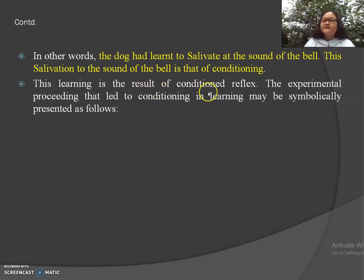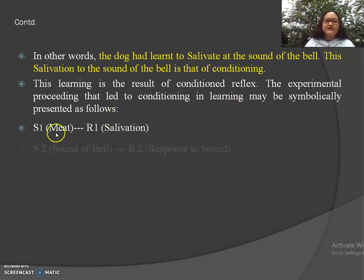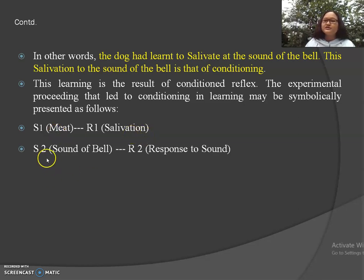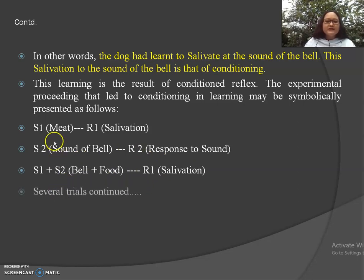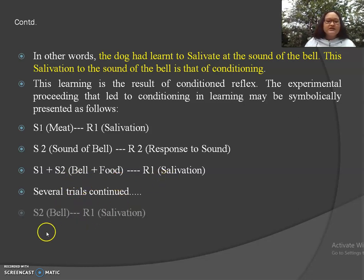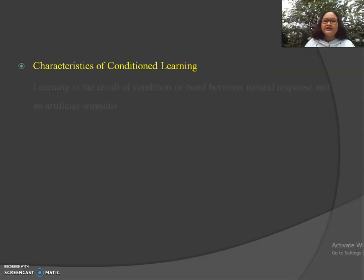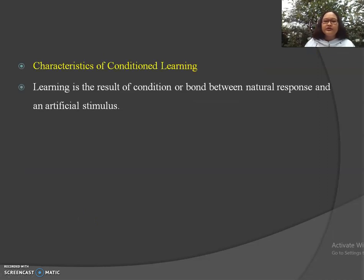Learning is the result of a conditioned reflex. The experimental proceeding may be presented symbolically: Stimulus 1 (meat) → Response 1 (salivation). Stimulus 2 (sound of bell) → Response 2 (respond to sound). Stimulus 1 + Stimulus 2 (bell plus food) → Response: salivation. After several trials, Stimulus 2 alone (sound of bell) → Response: salivation. This is the conditioning theory of learning.